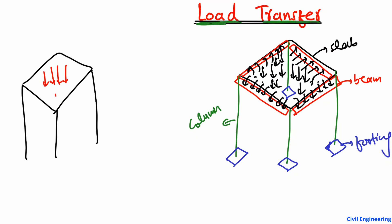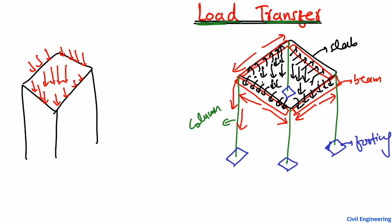When the load is on the slab it transfers to the beams on the four edges. Now the load is also in the beams on the four edges, but the beam cannot take all the load — it has to transfer the load into other structural members. So it transfers half of the load in one direction and half in the other direction into the columns. Similarly, each beam transfers half load to one column and half to the other column.